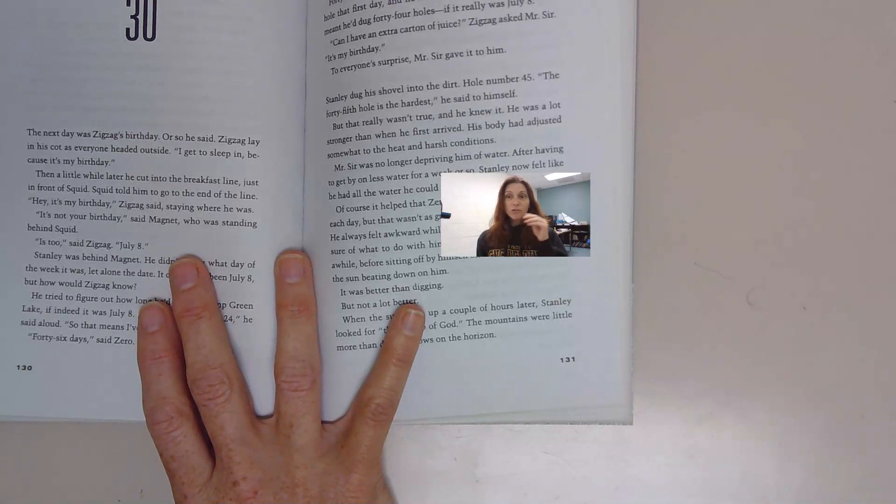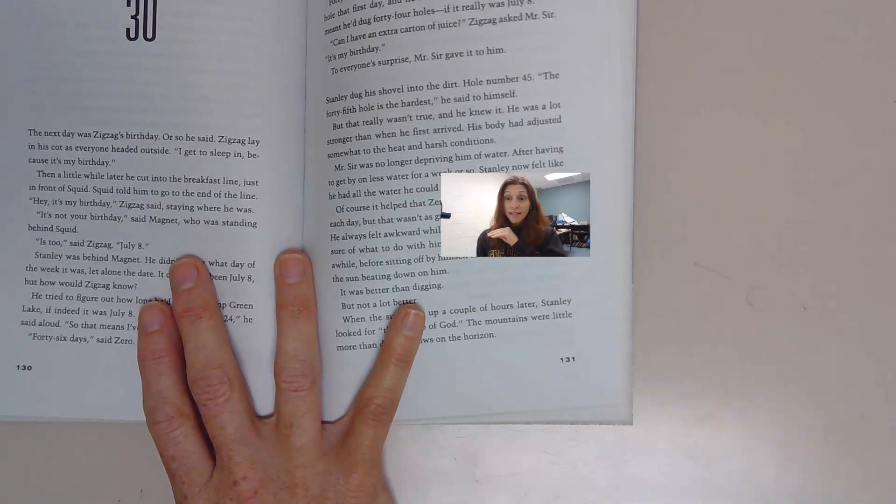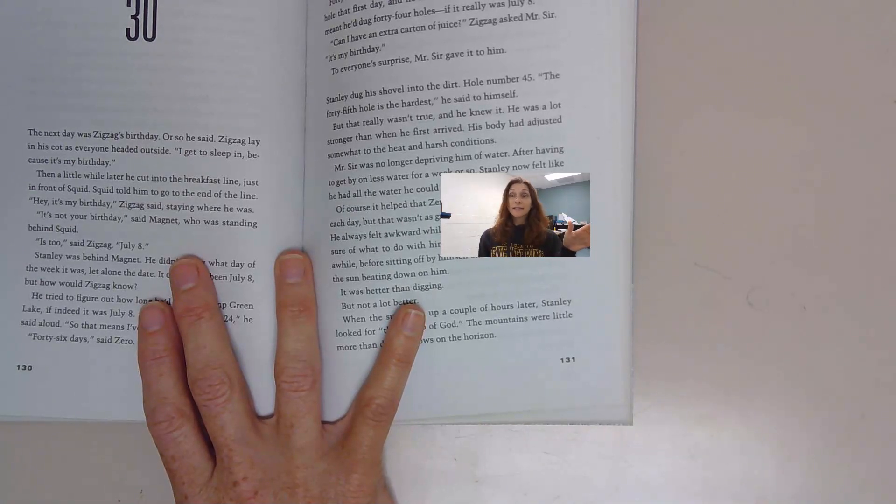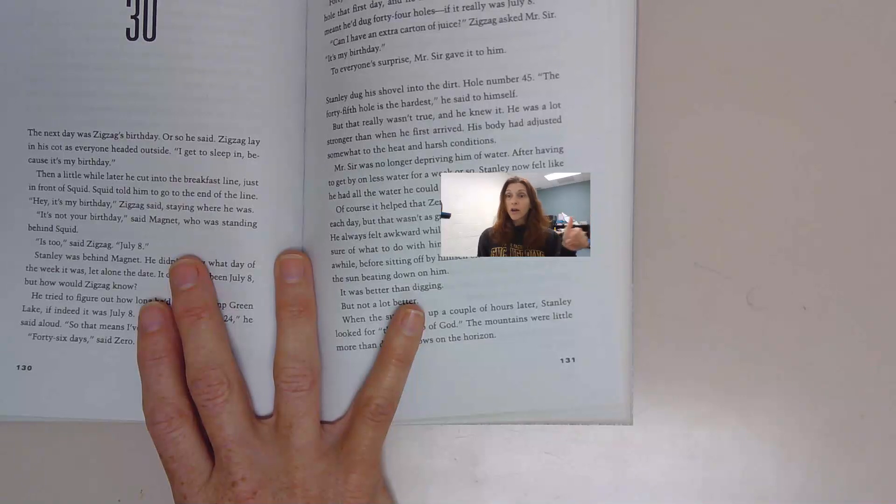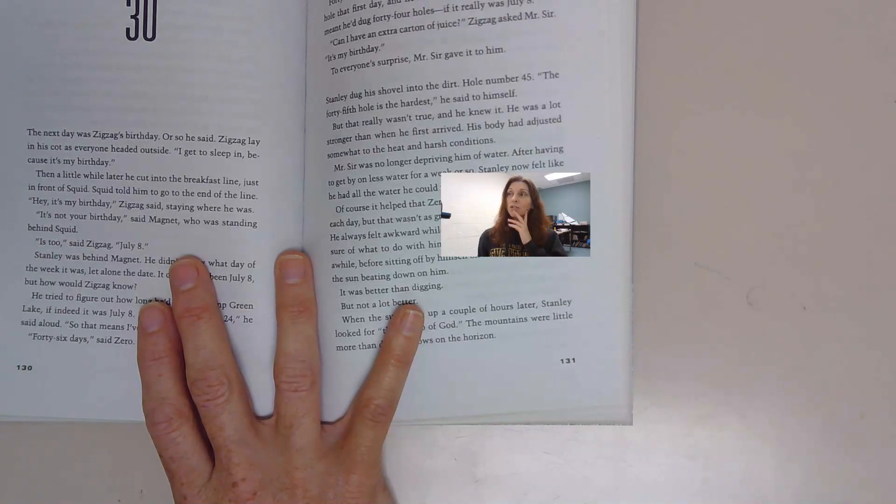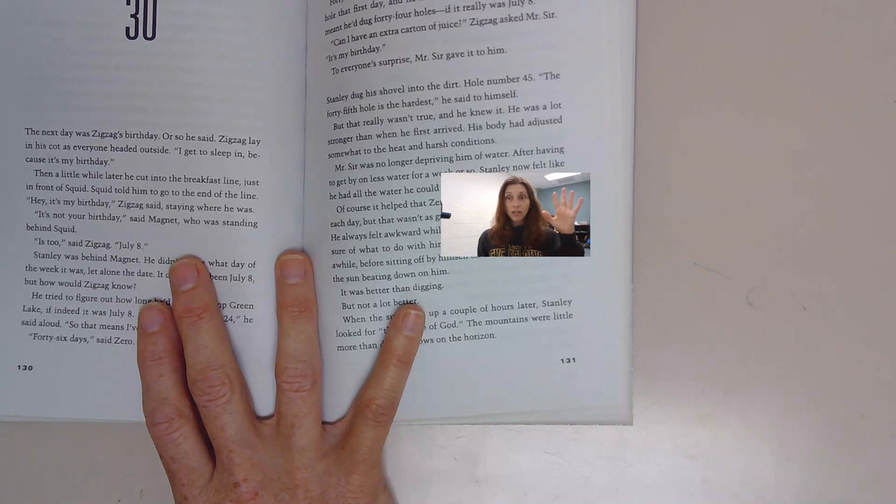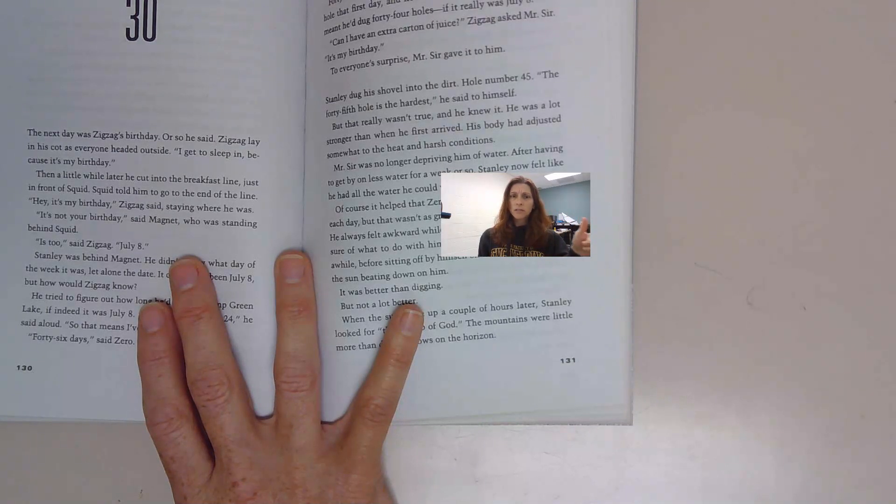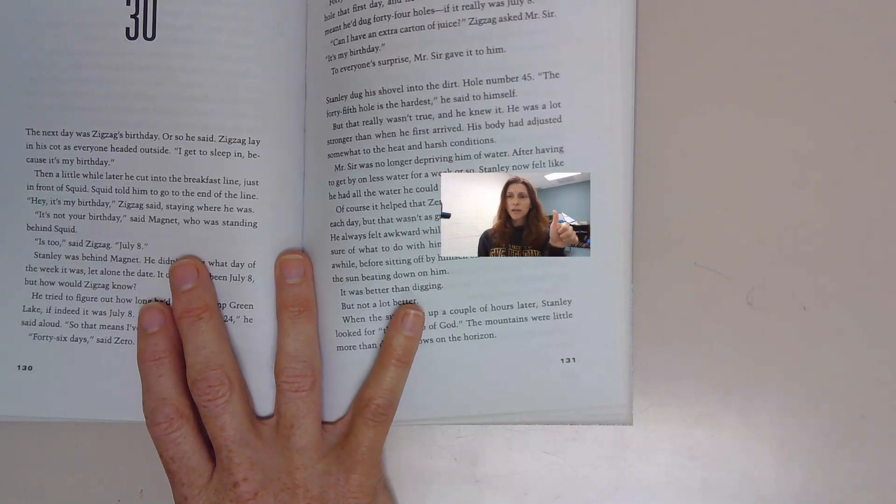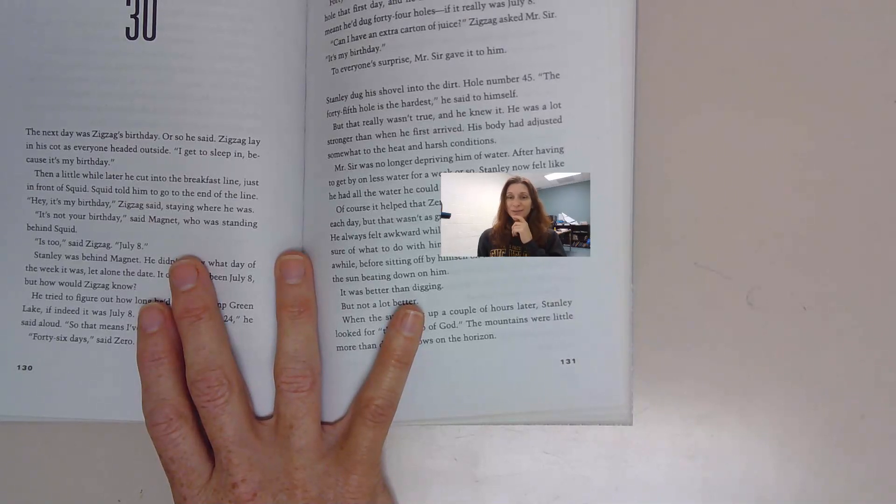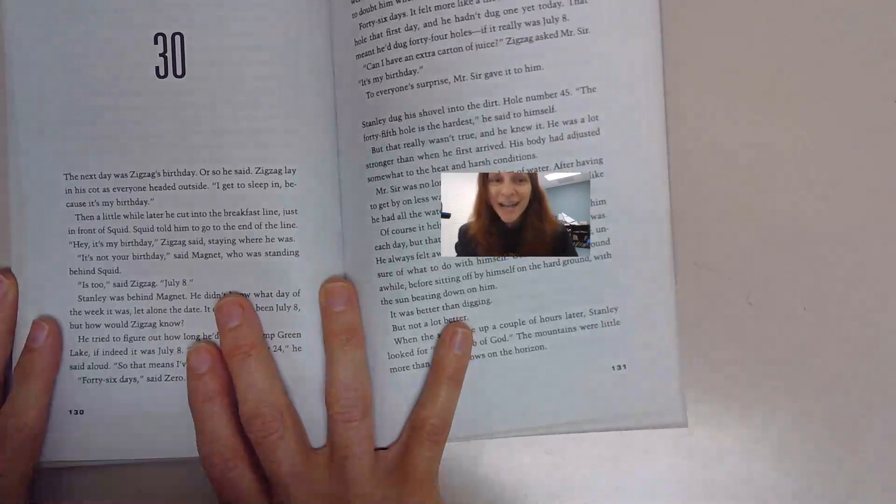We also are seeing the connection between Kissin' Kate Barlow and Stanley because Kissin' Kate Barlow left Stanley's grandfather in the middle of the desert. And he said he survived on God's thumb. And one day when there was a huge thunderstorm, Stanley thought he could see off in the distance a huge rock formation that looked like it was possibly shaped like a thumb. We see a lot of connections now. This is getting interesting. Let's see how they all come together.